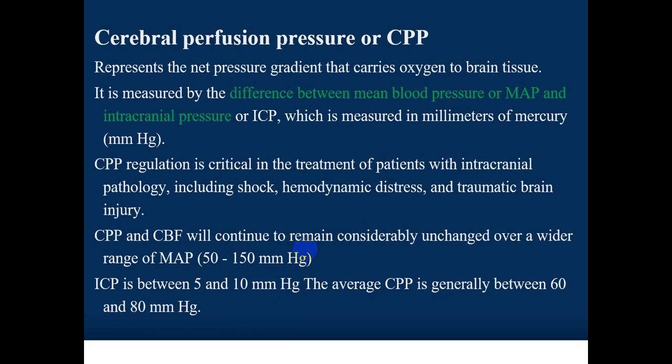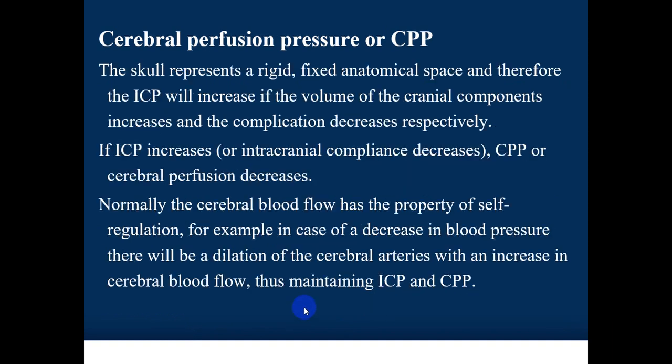We calculate cerebral perfusion pressure by subtracting ICP from MAP. Normal ICP is between 5 and 10 mmHg, and normal CPP is in the range of 60 to 80 mmHg. Values above or below this range may adversely affect the brain.